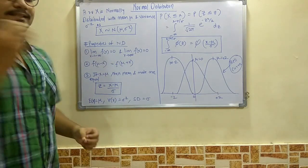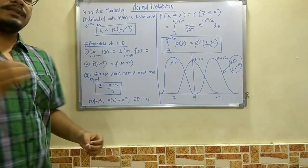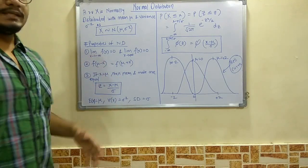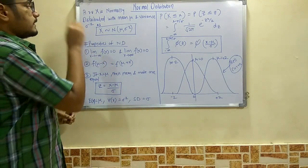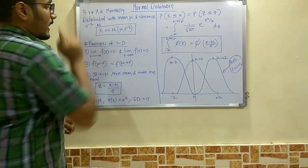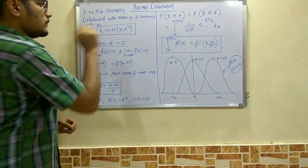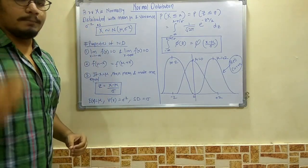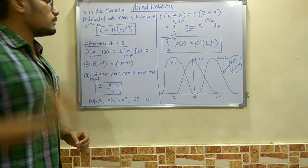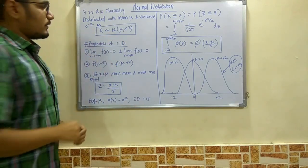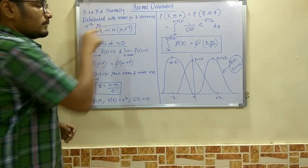First of all, if there is a random variable X, then it is said to be normally distributed with mean μ and variance σ². It is depicted as X normally distributed with these parameters: μ for the mean and σ² for the variance.